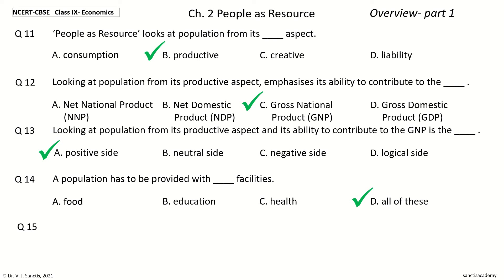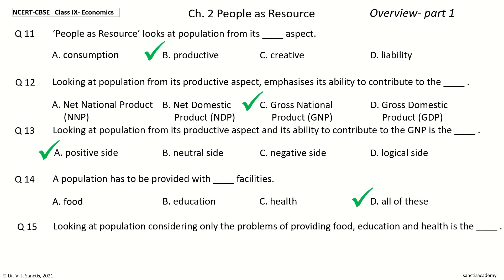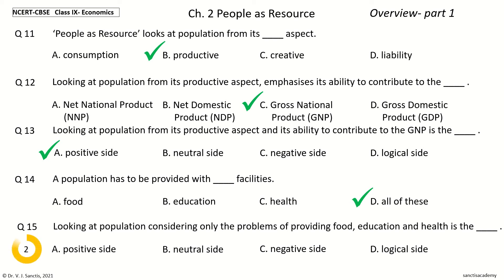Question 15: Looking at Population, considering only the Problems of Providing Food, Education, and Health is the ___. The options are: Positive Side, Neutral Side, Negative Side, Logical Side. Your time to choose. And the answer is: Negative Side. So, considering only the Problems of Providing Food, Education, and Health is the Negative Side.